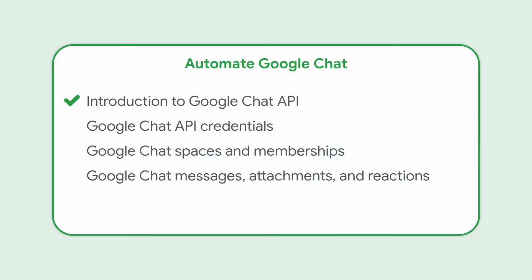To get started using the Google Chat API, you will need a Google account and access to the Google Cloud Platform Console. In the following videos of this series, you will learn about the difference between calling the API as a user versus an app and when each is appropriate. You'll learn the core concepts of spaces and memberships in Google Chat, including how to create direct messages, group conversations, and manage rosters. Lastly, you'll learn the basics of messages, attachments, and reactions using the Google Chat API.